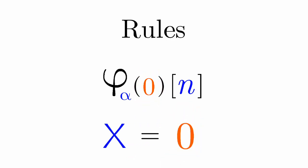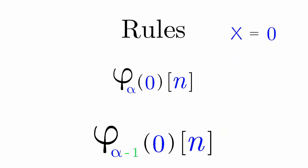Let's go over to the rules. Let's have Phi Alpha X of N when X is equal to 0. You do Phi Alpha minus 1 N times.